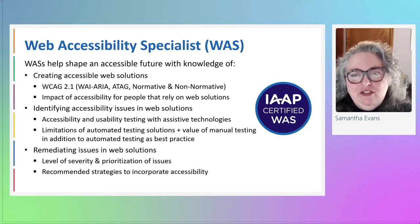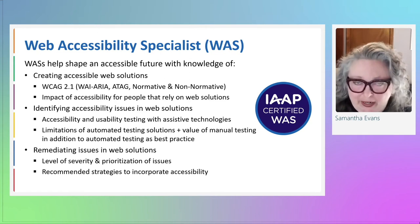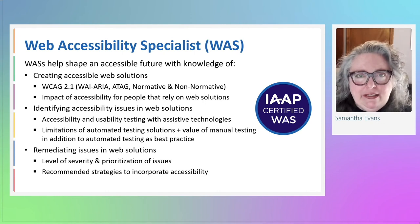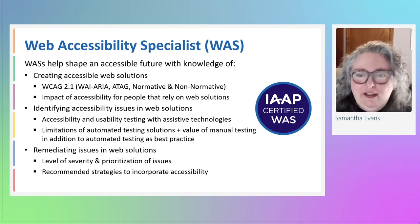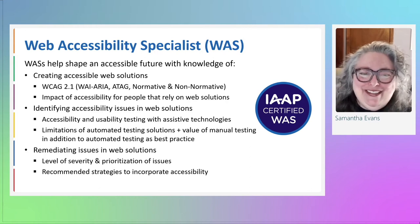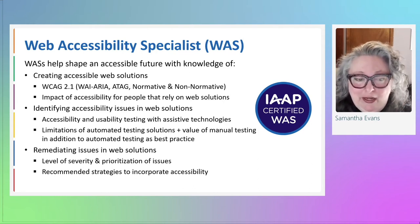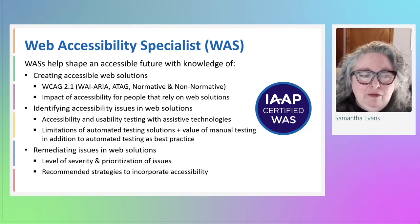WAS — Web Accessibility Specialist — is an intermediate technical program designed for someone with about three to five years of exposure and experience with interactive web accessibility components, usability and accessibility testing, audit, and remediation. WAS covers knowledge of creating accessible web solutions including WCAG 2.1, ARIA, ATAG, normative and non-normative data, the impact of accessibility for people relying on web solutions, identifying accessibility issues, and understanding the limitations of automated testing versus manual testing best practices.